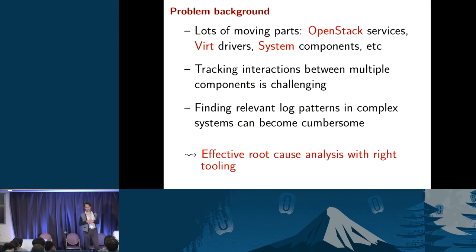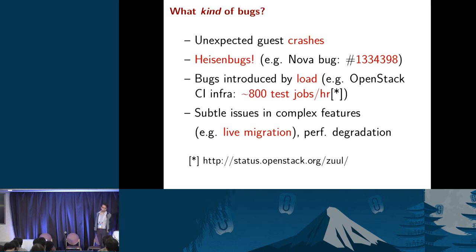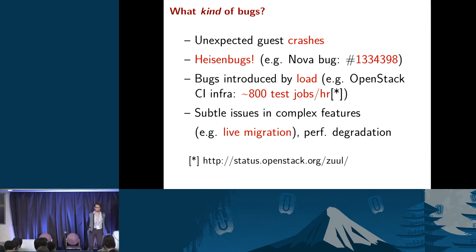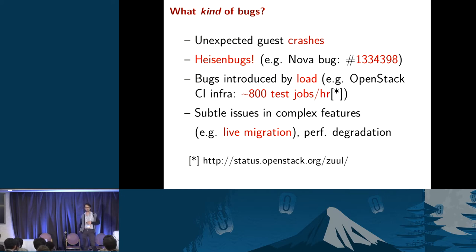We'll see what kind of tools we have at our disposal to troubleshoot these things, and also some of the log patterns that LibVirt offers. Some bugs are not really specific to OpenStack — they include notorious Heisenbugs that only occur under certain conditions and aren't easily reproducible. OpenStack CI runs about 800 test jobs per hour, so you can imagine what kind of load that generates and the subtle issues that are hard to track down.